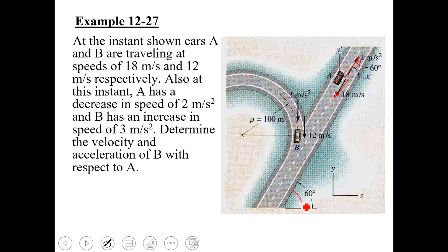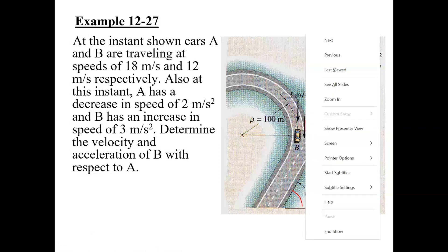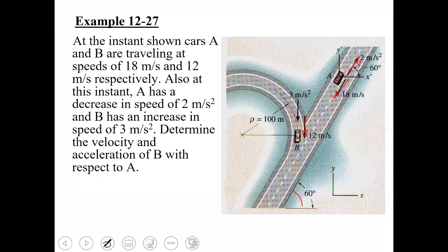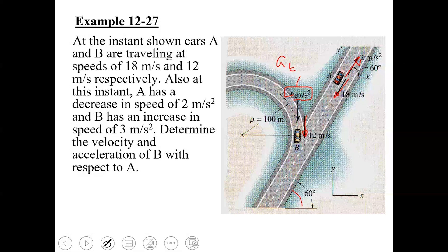Car B is travelling along a curved path. At the instant shown, car B is moving with a speed of 12 meters per second and its tangential component of acceleration is 3 meters per second squared. Since car B travels along a curved path, it has both a tangential and a normal component of acceleration. The total acceleration of B is the vector sum of these two components. We need to determine the velocity and acceleration of car B with respect to car A.